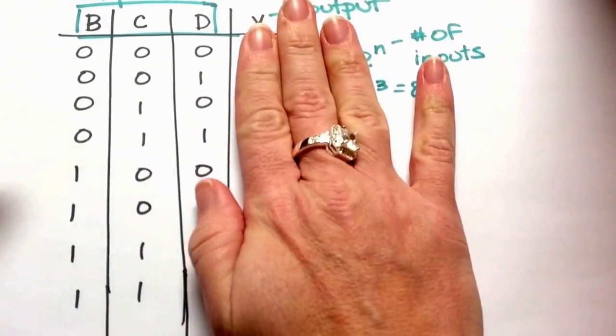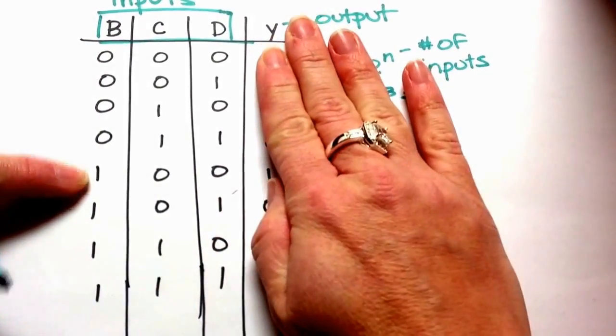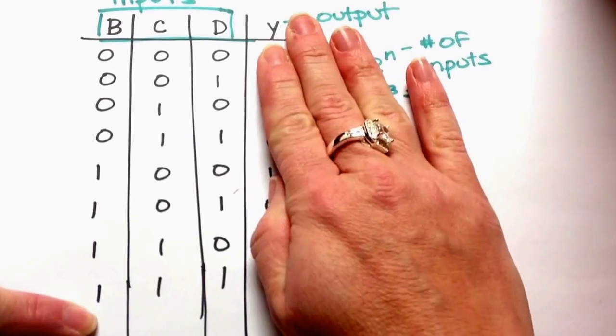and they literally are zero, one, two, three, four, five, six, seven in binary.